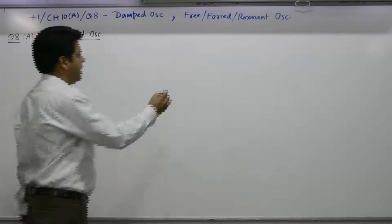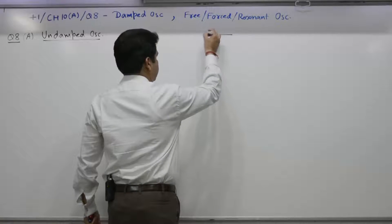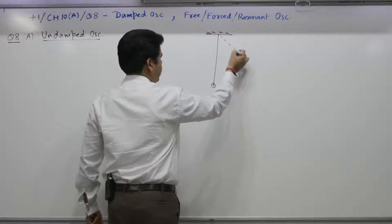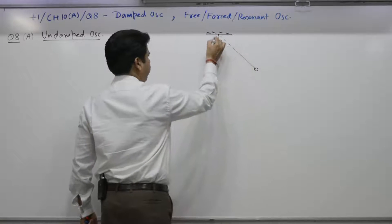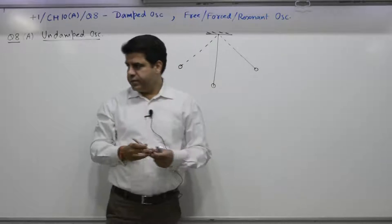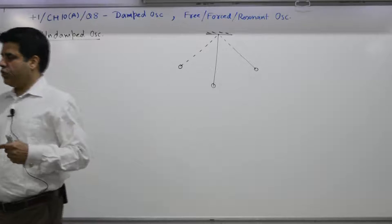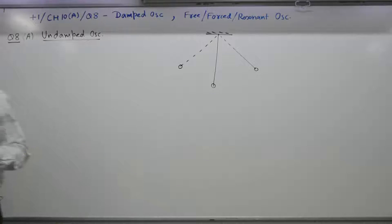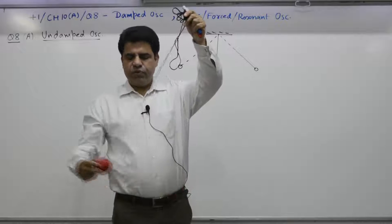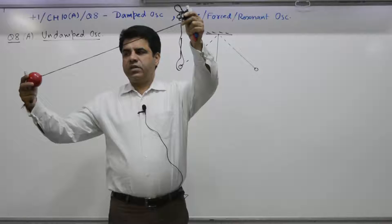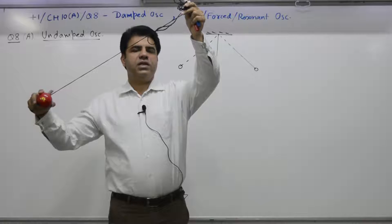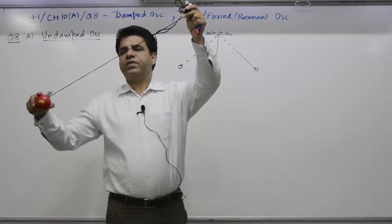The mechanical analogy is: if you have a pendulum and you take it to one side, and if there is no friction and no loss of energy, the pendulum will continue to oscillate with the same amplitude. You move it to some amplitude, release it, and it will continue to oscillate with that same amplitude — because there is no friction and no loss of energy.